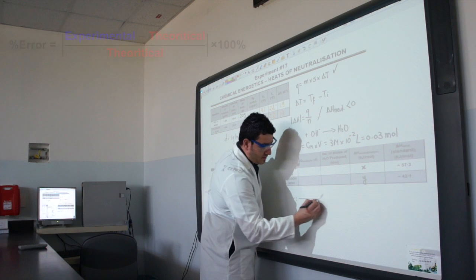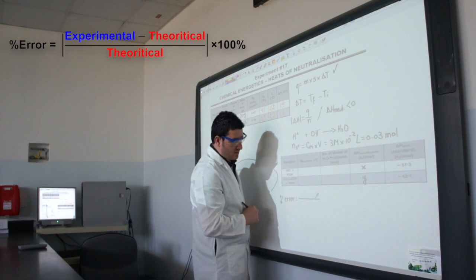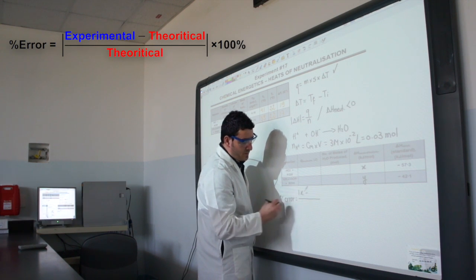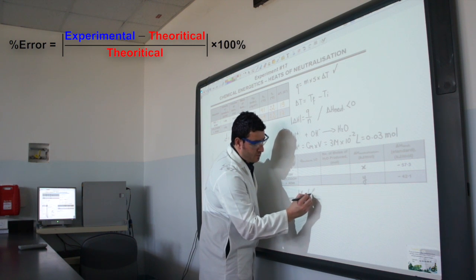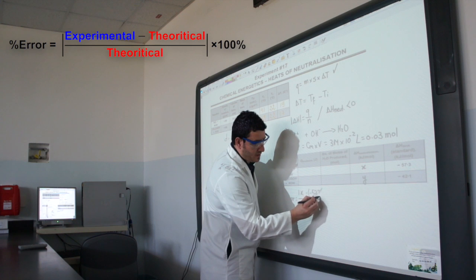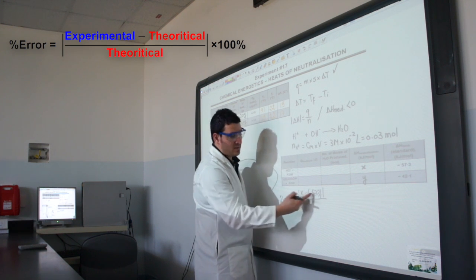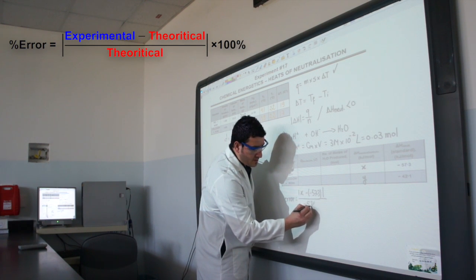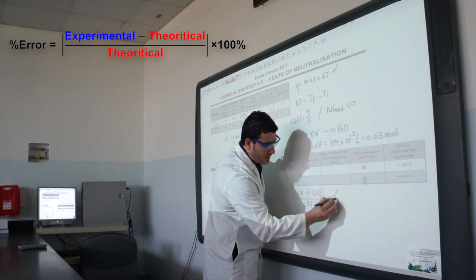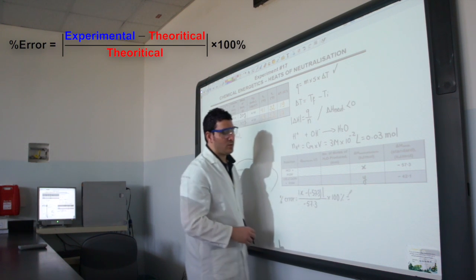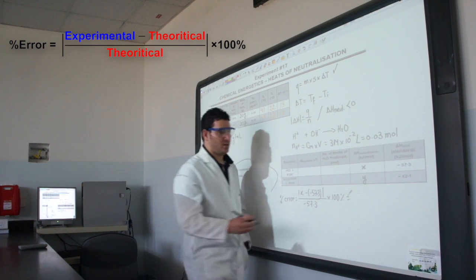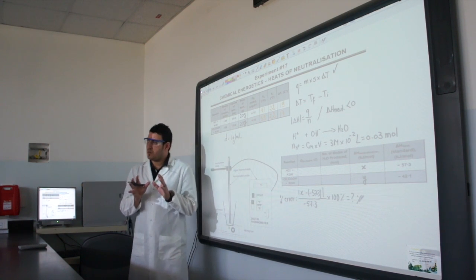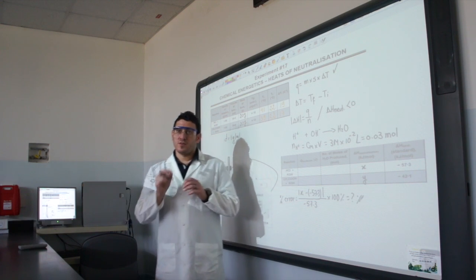In the case of strong acid strong base, it's going to be equal to the absolute value of x, whatever value you found, minus—so I'll put minus 57.3, of course x is a minus value as well—divided by the theoretical value which is minus 57.3, multiplied by 100 percent, and you will find the value of your error.